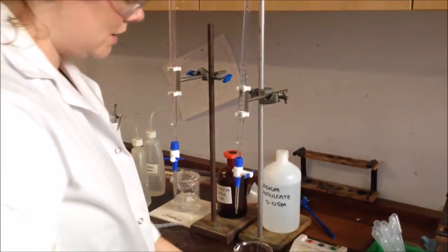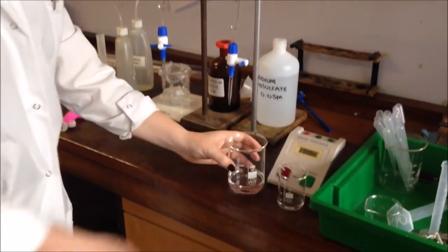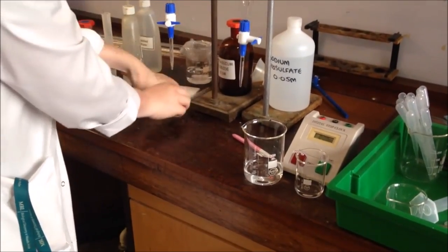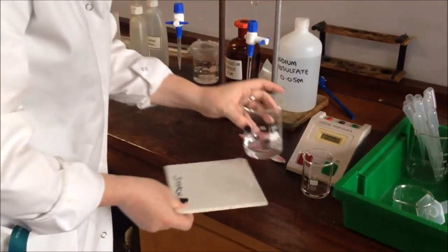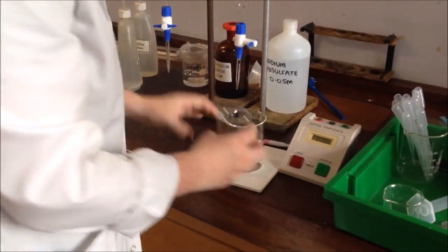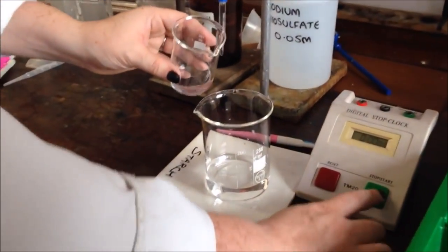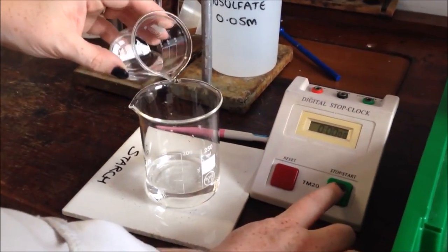Now I have my solution here, I have my hydrogen peroxide here. What I'm going to do—I'm going to do this on a white tile so you can see it a bit clearer—is mix the two of them, and we are looking for the time taken for a colour change. So as soon as I'm mixing, I'm pressing start.